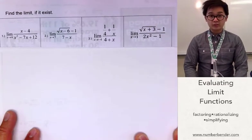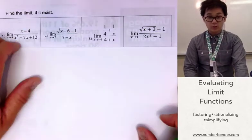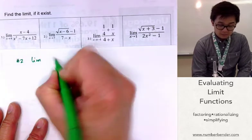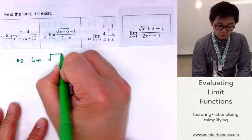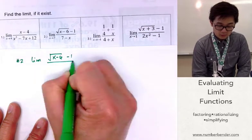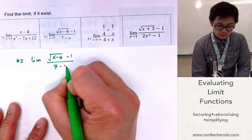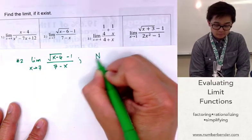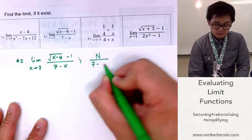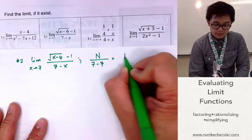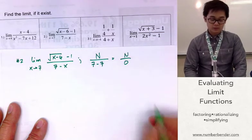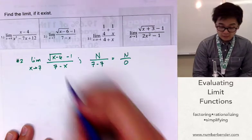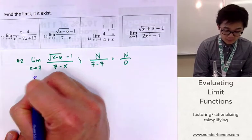Now let's have problem number 2. It's a different function — we're seeing square roots. For number 2, we have the limit of the square root of x minus 6, minus 1, all over 7 minus x as x approaches 7. By substitution, if we plug in 7, the function will be undefined. So we'll be using another technique — rationalizing.